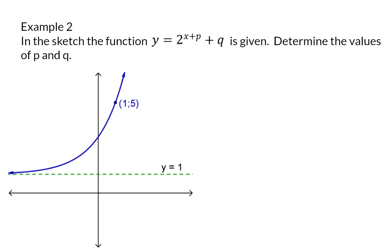So, here it is mentioned that there is no a value, but there is a p value that you need to determine. Again, we are going to start by looking at the horizontal asymptote at y equals 1, which means that the q value is 1.